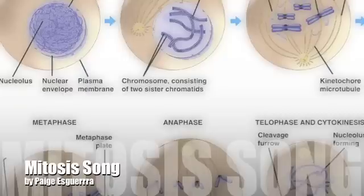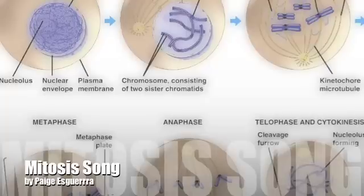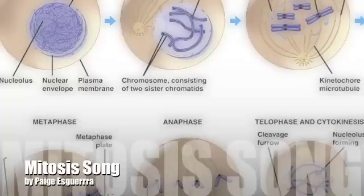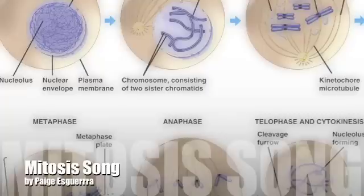The first stage of mitosis is prophase, so let's begin there. During this, the chromatin condenses into chromosomes — in other words, the DNA is packed together more. The membrane around the nucleus breaks down; that's something you can't ignore. The centrioles move to the opposite sides of the cell, connected by the spindle fibers. Metaphase comes next, and the chromosomes move to the center. Then you can see the spindle formed by the threads.